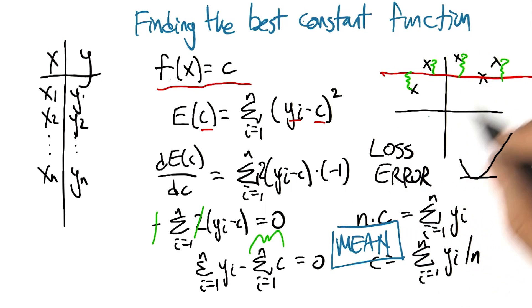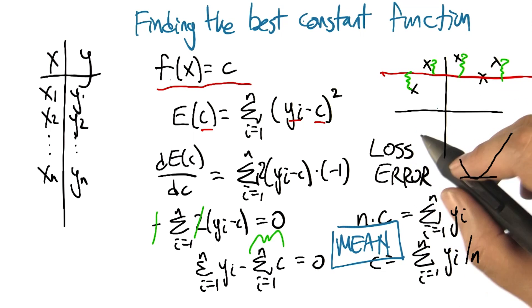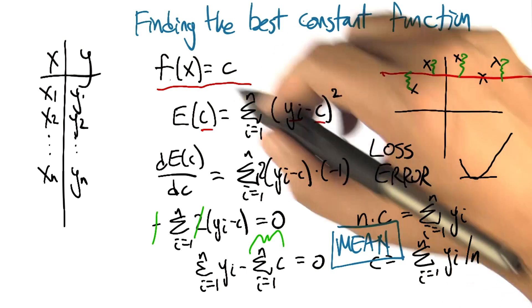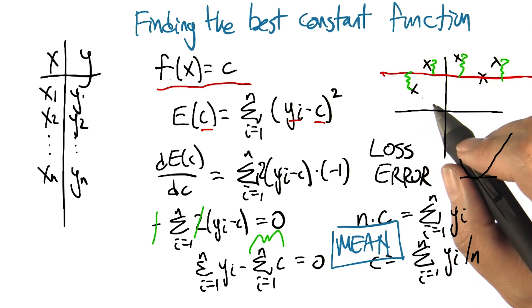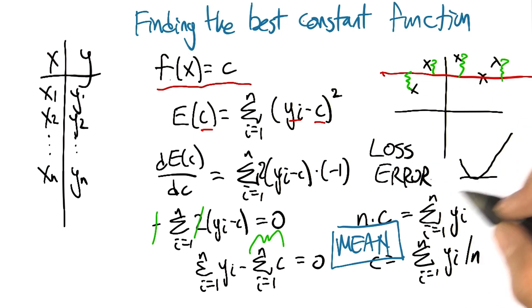And it generalizes to higher, higher order functions here. Not higher order functions, but more variables like lines. Lines that have some non-constant slope. By doing the same kind of process and things actually work out really nicely.